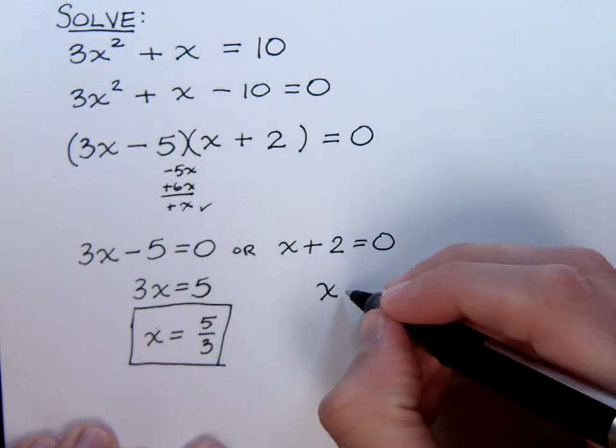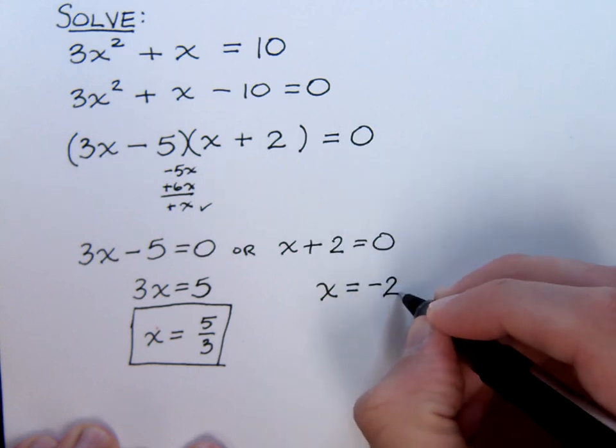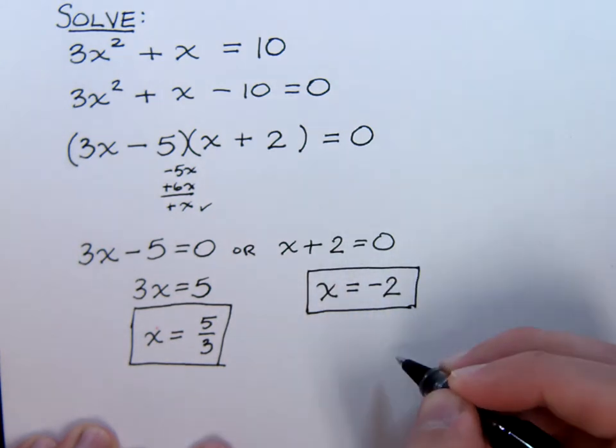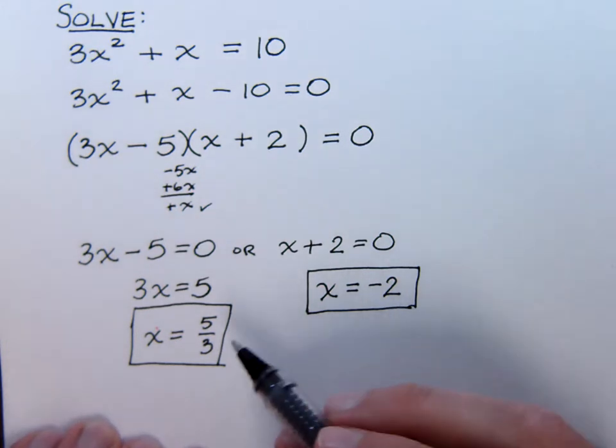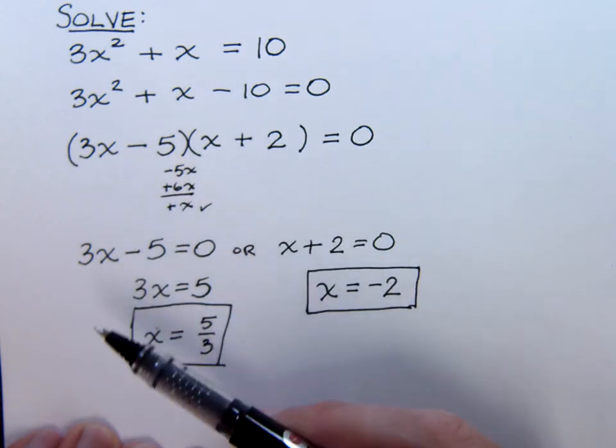And for the other one, we're going to have that x equals subtract the 2 over negative 2. There you have it. Now, you do want to make sure you take the time to check your work on these guys just by plugging them back into the original equation.